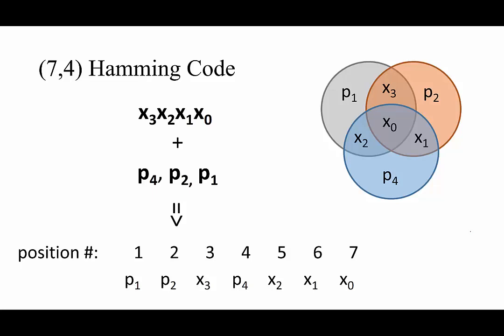In this video we will discuss one example of the Hamming code, the 7-4 Hamming code. The 7-4 Hamming code encodes a 4-bit message using only 3 parity bits for a total of 7 bits.